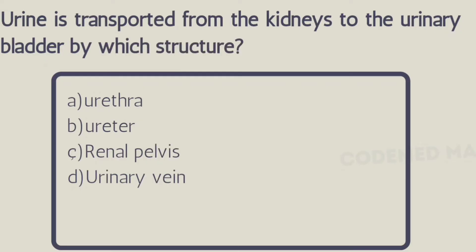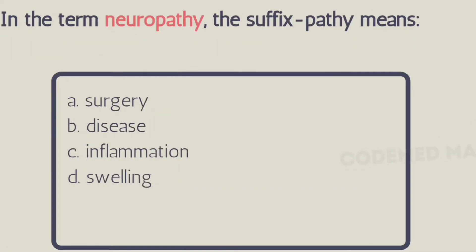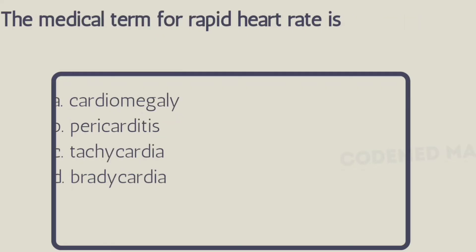Next question: urine is transported from the kidneys to the urinary bladder by which structure? Option A: urethra, Option B: ureter, Option C: renal pelvis, Option D: urinary vein. The right answer is Option B, ureter. Next question: in the term neuropathy, the suffix '-pathy' means — Option A: surgery, Option B: disease, Option C: inflammation, Option D: swelling. The right answer is Option B, disease.